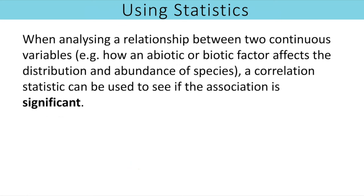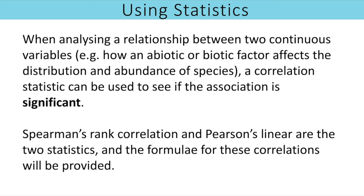When collecting and analysing data, we should always use a statistic to determine whether we have a significant difference or correlation. When analysing a relationship between two continuous variables — such as how an abiotic or biotic factor affects the distribution or abundance of a species — we look at correlation. For example, is there a correlation between light intensity and the abundance of a particular species? We would use a correlation coefficient such as Spearman's rank or Pearson's linear, with the formula provided in the exam.